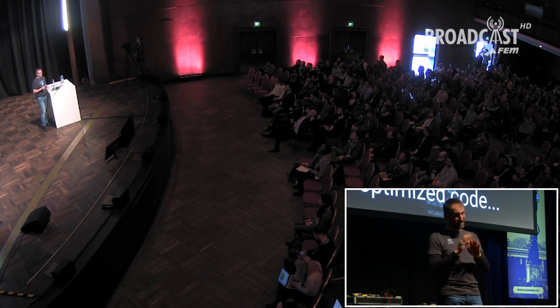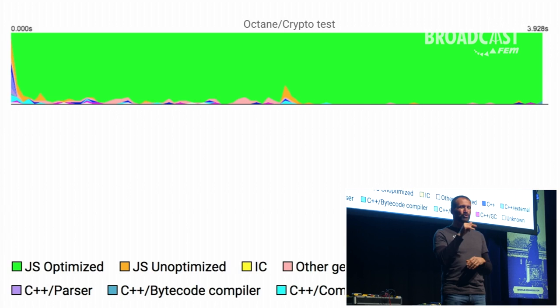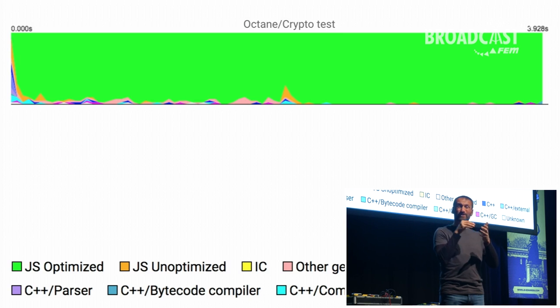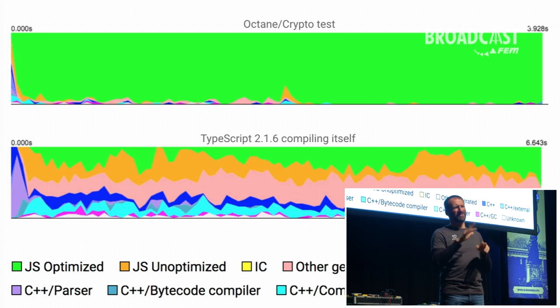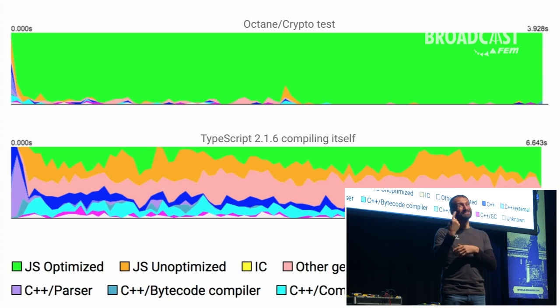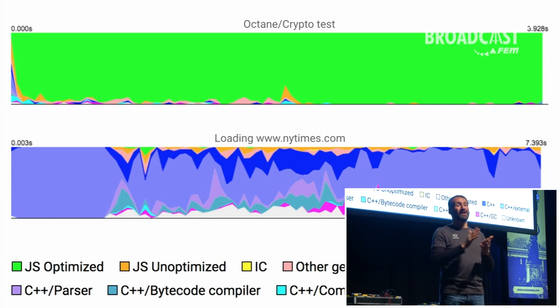But this is not all. There was a lot of focus on the optimizing compiler, and it's cool to work on it, but it's not just about optimized code. There's a lot more to JavaScript performance than just trying to make the peak performance case awesome. For example, looking at the Octane crypto benchmark, everything green means time in optimized code — any work on optimized code immediately benefits that benchmark. But looking at a more realistic example like TypeScript compiling itself, there's not a lot of green — we spend a lot of time in other parts of the VM too. And loading a web page — try to find the green. We also need to work on the other parts of the engine, not just the optimizing compiler.